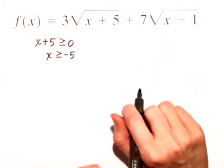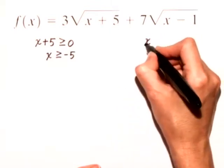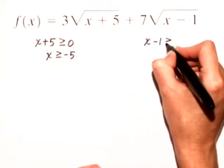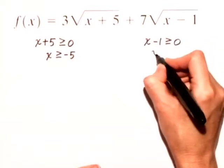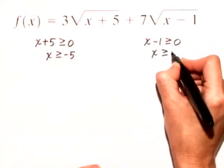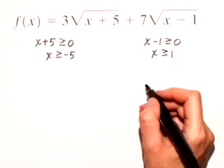Let's look at our second radical and do the same thing. We need to make sure that x - 1 ≥ 0. So in this case, x ≥ 1.